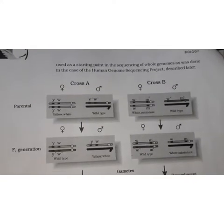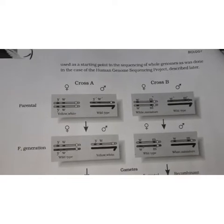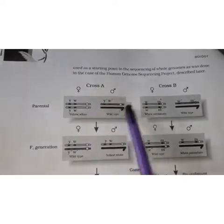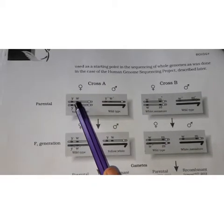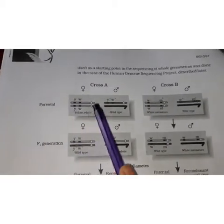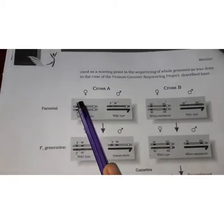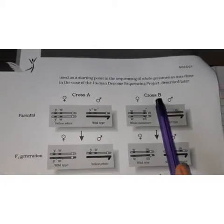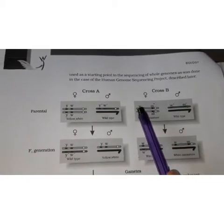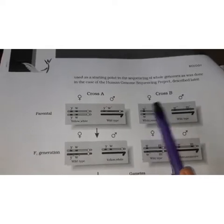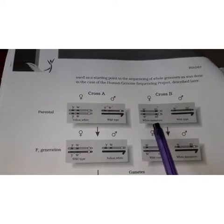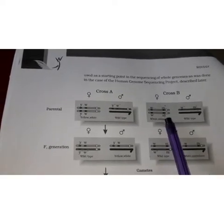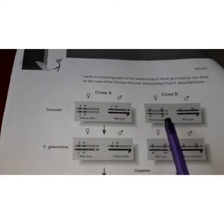A similar example has been provided in your book. This is the parental generation, which shows that in cross A, the Y and W genes are very closely related and tightly linked to each other. Whereas in cross B, it suggests that the W and M genes — that is, white and miniature — are very far apart from each other and are loosely linked with one another.